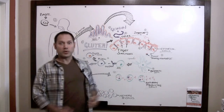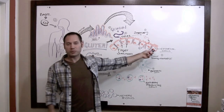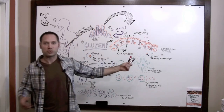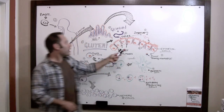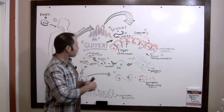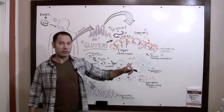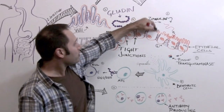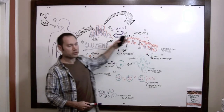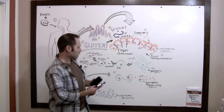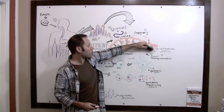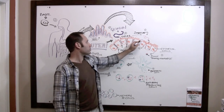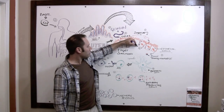Now, for people without celiac disease or gluten sensitivity, your gut's going to heal — as quickly as 20 minutes or so, depending on how strong your gut is. For people with celiac disease or gluten sensitivity, these CXCR3 receptors are overactive. You're going to get a bunch of these receptors coming up out of the cells, and that's going to cause the upregulation of zonulin, which causes the degradation of these tight junctions and allows that gliadin molecule — that gliadin protein — to get through and into the bloodstream.